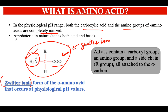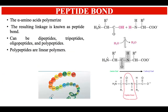Amino acids are amphoteric in nature — they can act both as an acid and a base, as just discussed. Now, talking about the bonding between different amino acids when they are linked together: the bond present between two individual amino acids is known as a peptide bond.